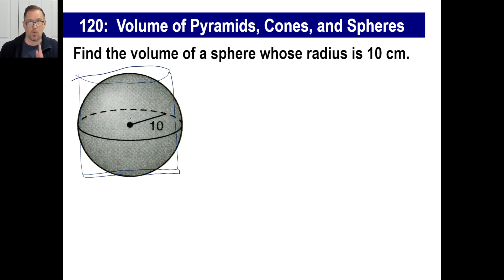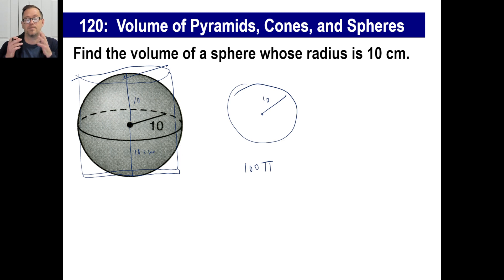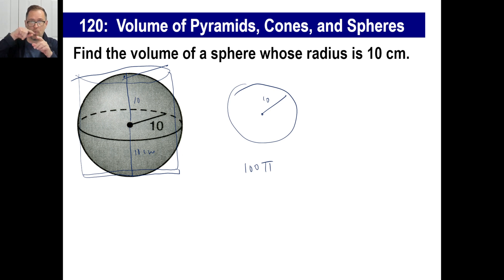The area of the base is pi times the radius squared, which is 100π. For the height: the radius is 10, and it swings both up and down, so the total height of the cylinder is 20. The volume of the right circular cylinder is the area of the base times the height: 100π times 20 equals 2000π.